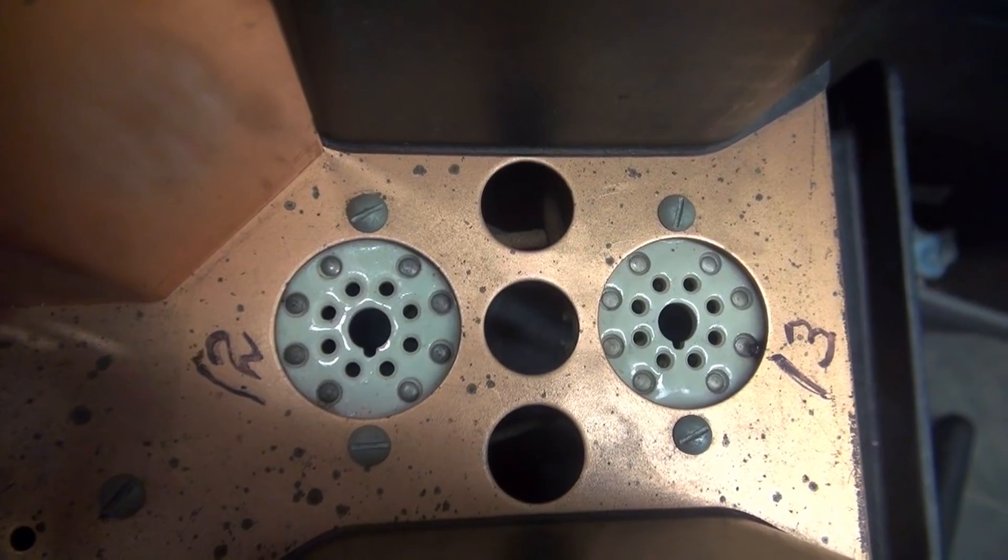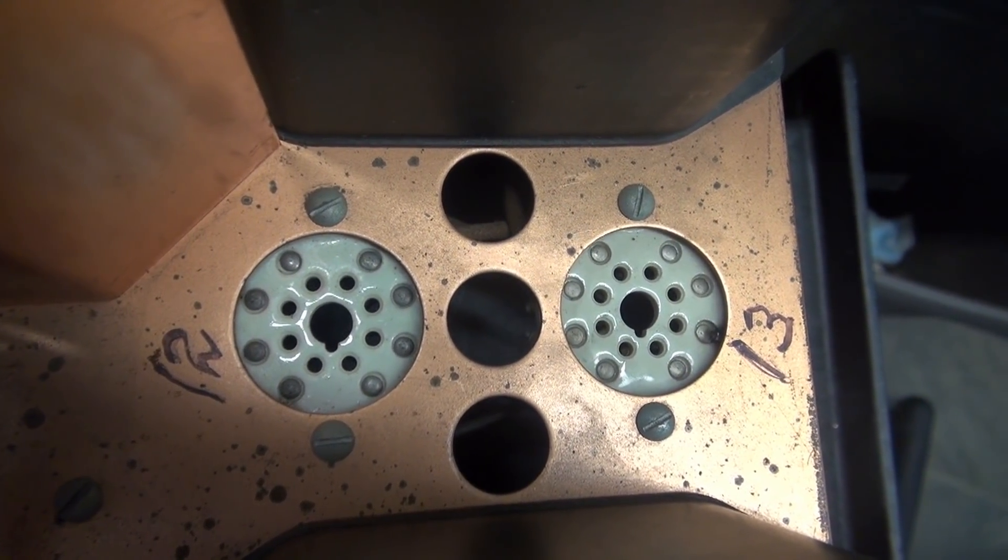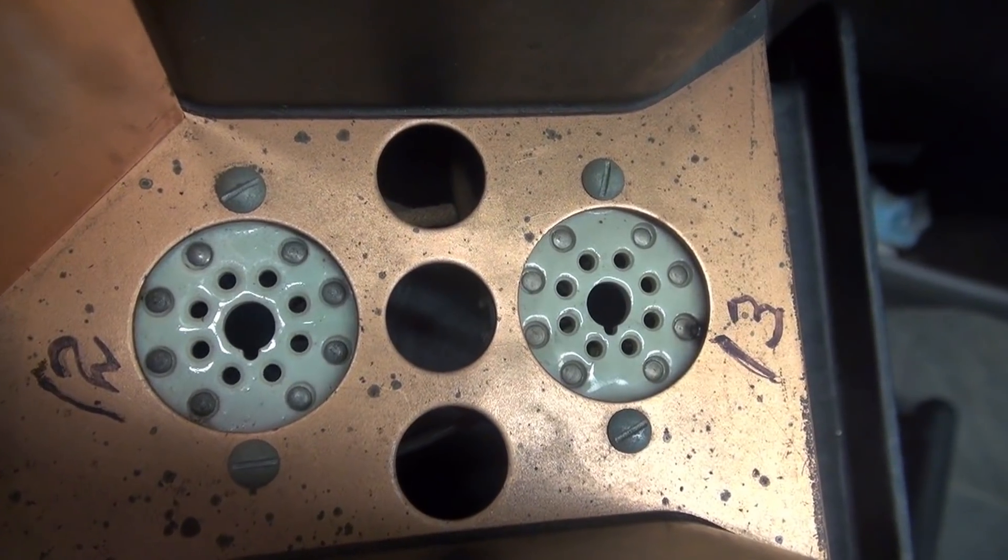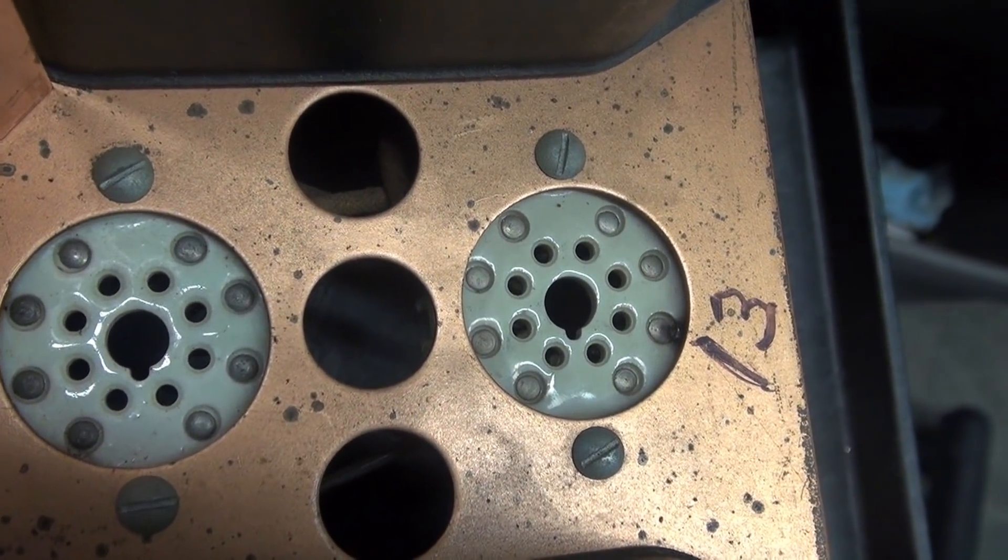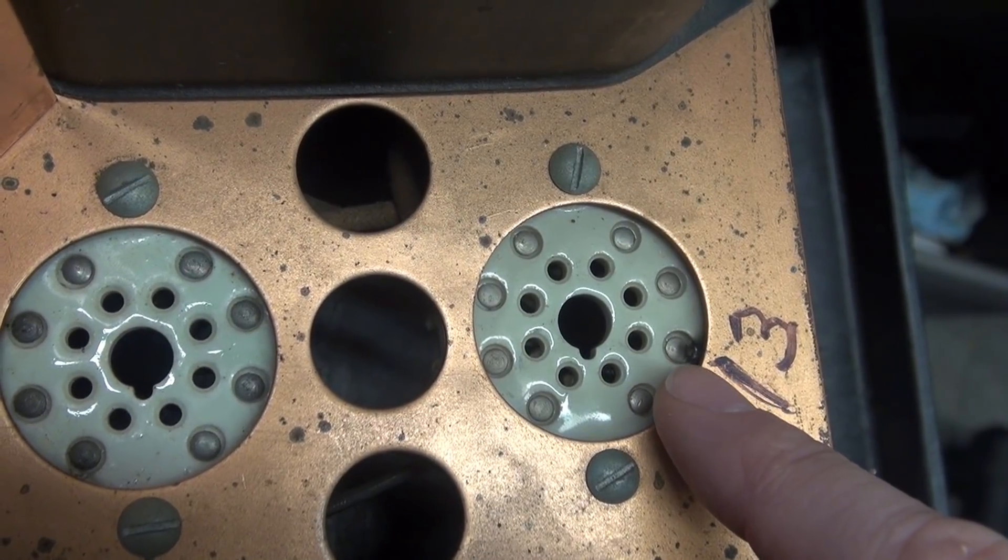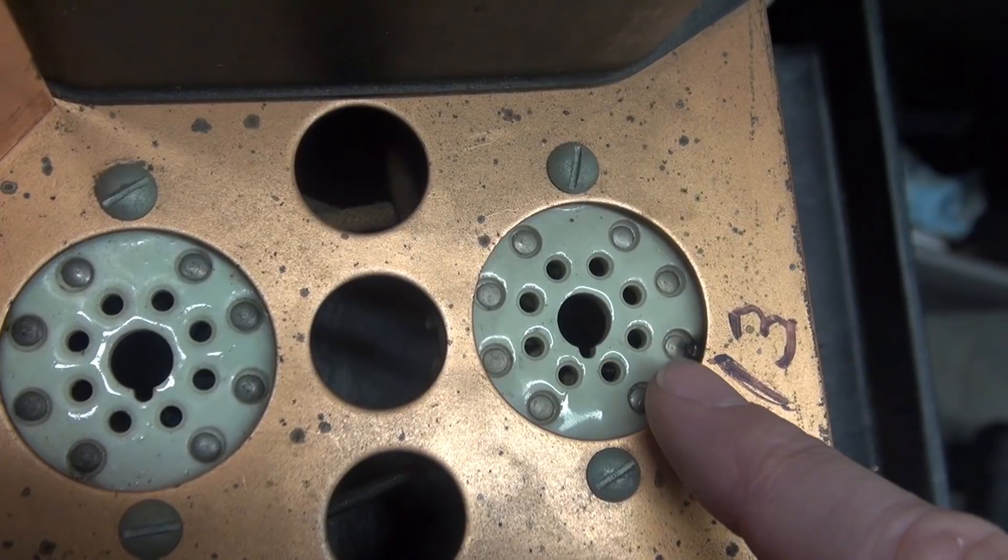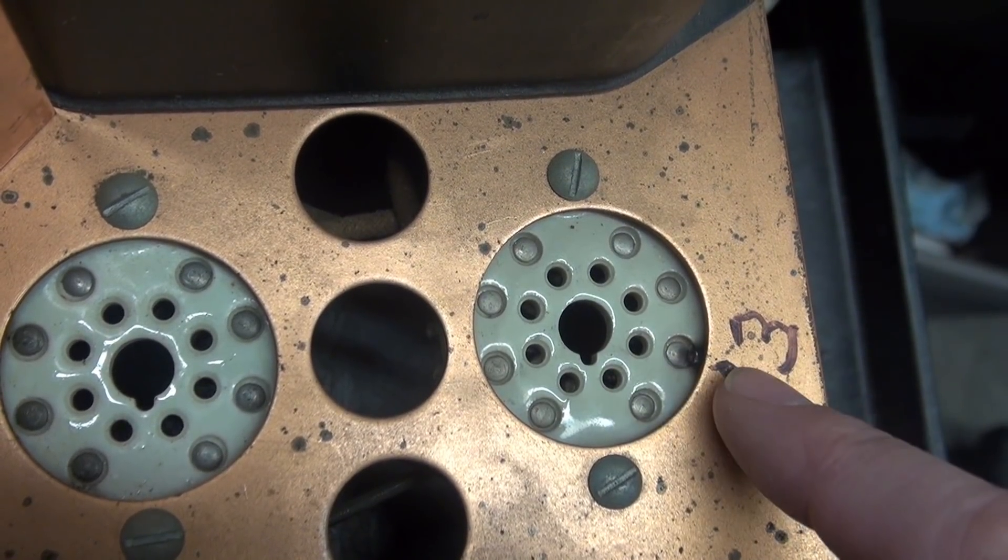So here are the tube sockets for the 5R4 rectifiers on the DX100. If you look over here, the one that says 13, you can see a little black mark right there. What that is is a flashover from that terminal to chassis.